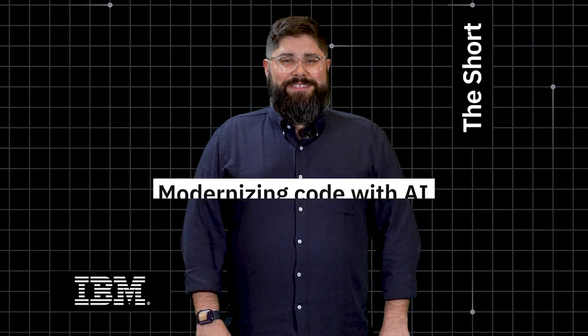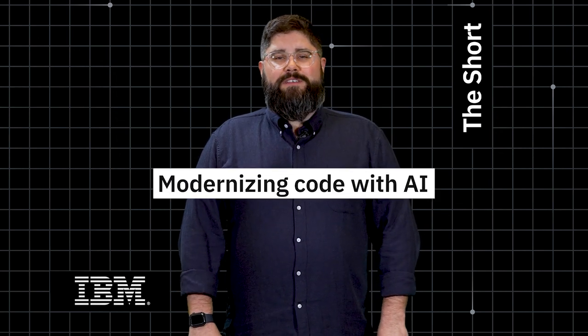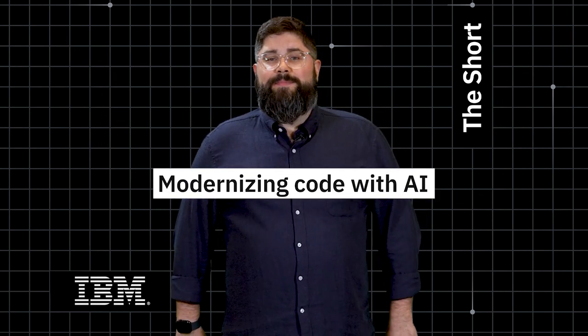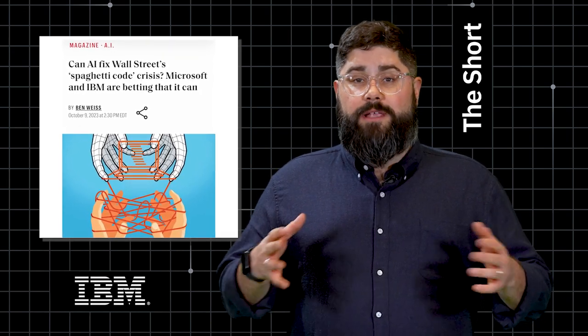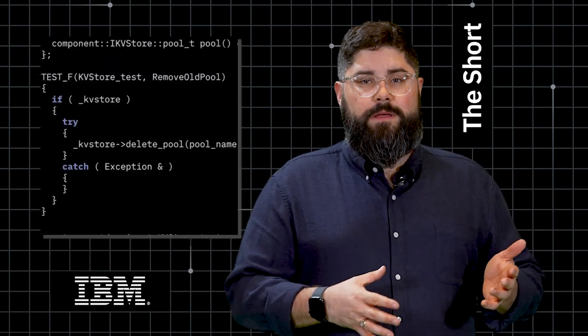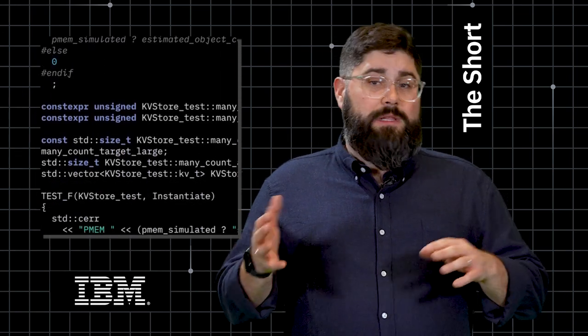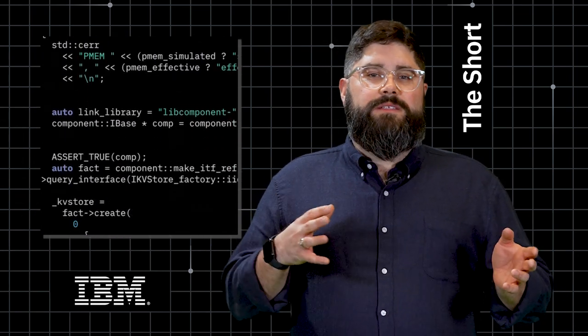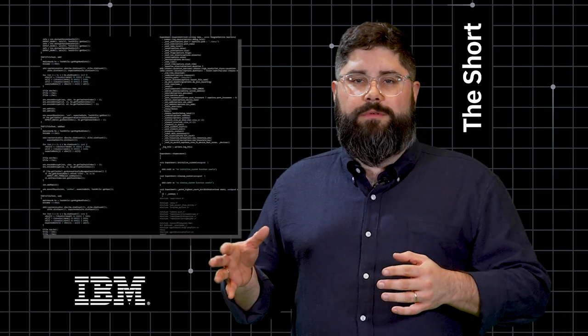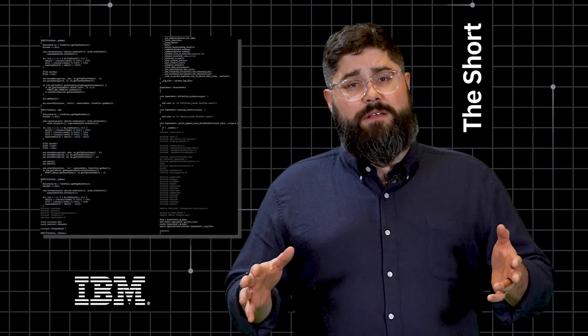And in case you missed it, AI is looking to fix Wall Street's spaghetti code. Mission-critical systems around the world rely on secure legacy code languages like Cobalt. But for companies looking to modernize their operations with more flexible cloud-based systems, the transition from Cobalt to newer code languages like Java is a massive challenge.